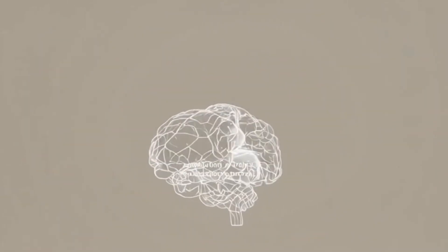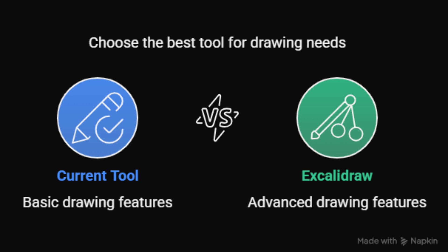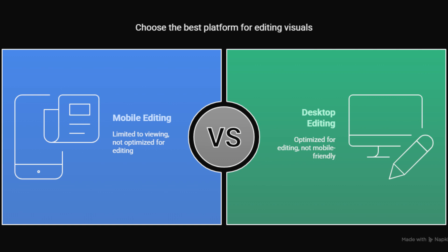However, Napkin AI has some limitations. Limited drawing capabilities — it lacks advanced drawing features found in tools like ExcaliDraw. Mobile editing constraints: while visuals can be viewed on mobile, editing is optimized for desktop. AI accuracy: as with any AI tool, generated visuals may contain inaccuracies and should be reviewed.